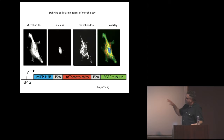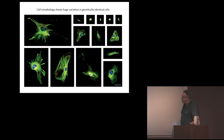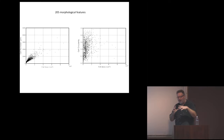My student Amy Chang did a heroic experiment making a construct that lets you simultaneously image several different structures in the cell: the microtubule cytoskeleton, the nucleus where all the DNA is, and the mitochondria — the power-generating organelles that generate a complicated ramifying network. We can image all those simultaneously in living cells to assess the morphological state as a function of time. Just looking at any given point in time, you see incredible variety in the appearance of cells. These are all genetically identical mouse fibroblasts supposedly doing the same thing, but they have dramatically different sizes and appearances.